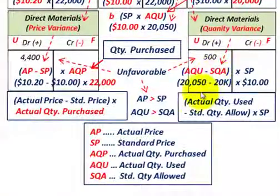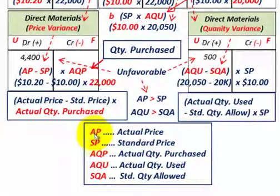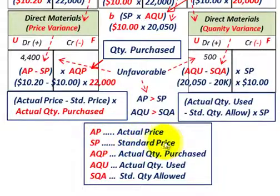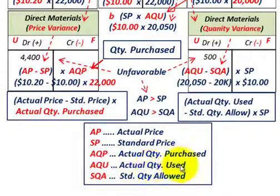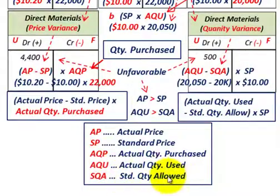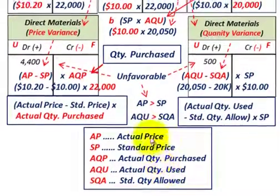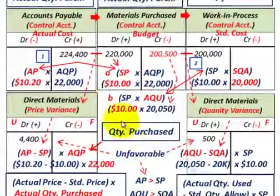Let's go over the key abbreviations: AP stands for actual price; SP stands for standard price; AQP stands for actual quantity purchased; AQU stands for actual quantity used; and SQA stands for standard quantity allowed. That's what's shown in our T-accounts.